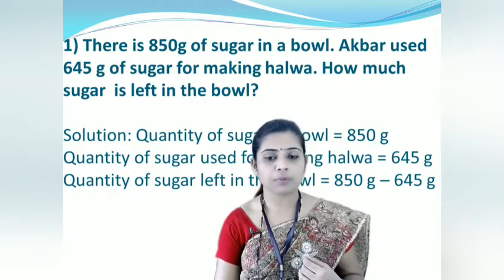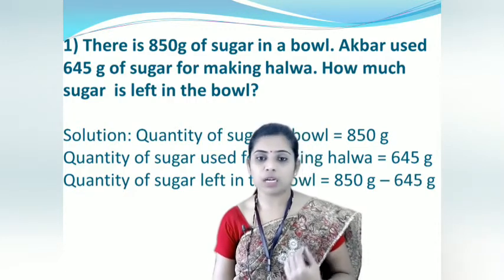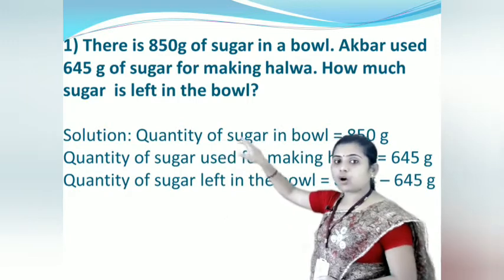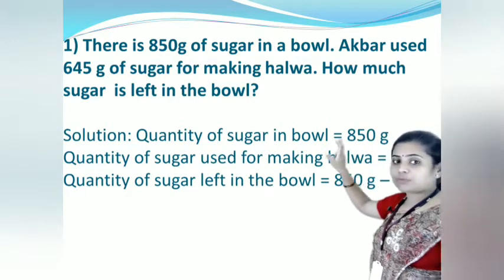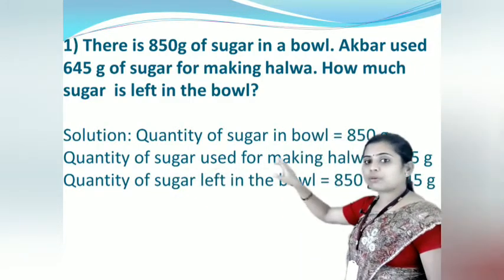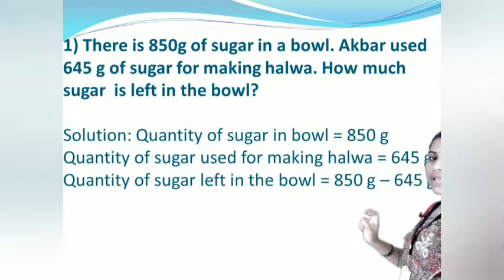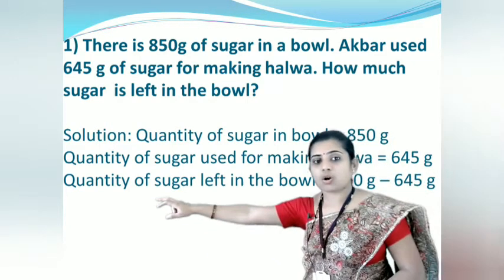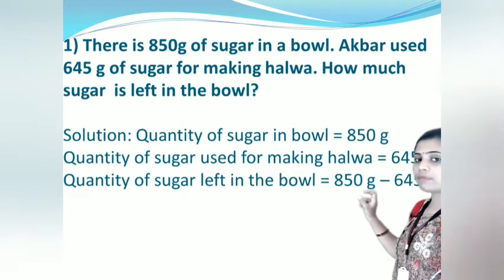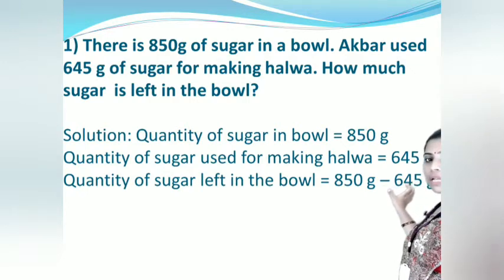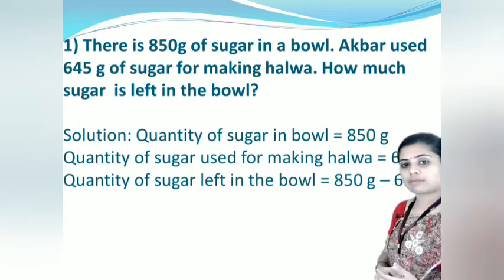Let us start to solve the word problem. Always begin with the given things. Quantity of sugar in the bowl is 850 grams. Quantity of sugar used for making halwa is 645 grams. What we have to find out is the quantity of sugar left in the bowl. We get that by subtracting the sugar used from the total.